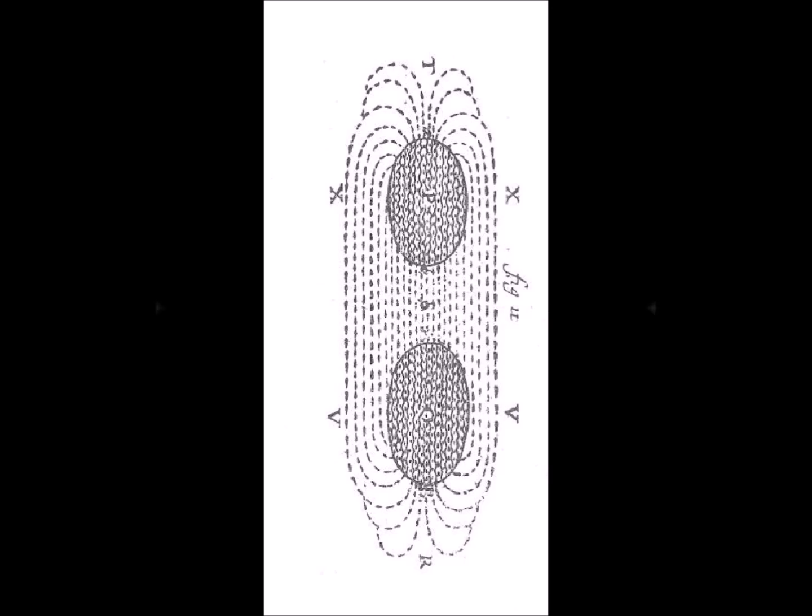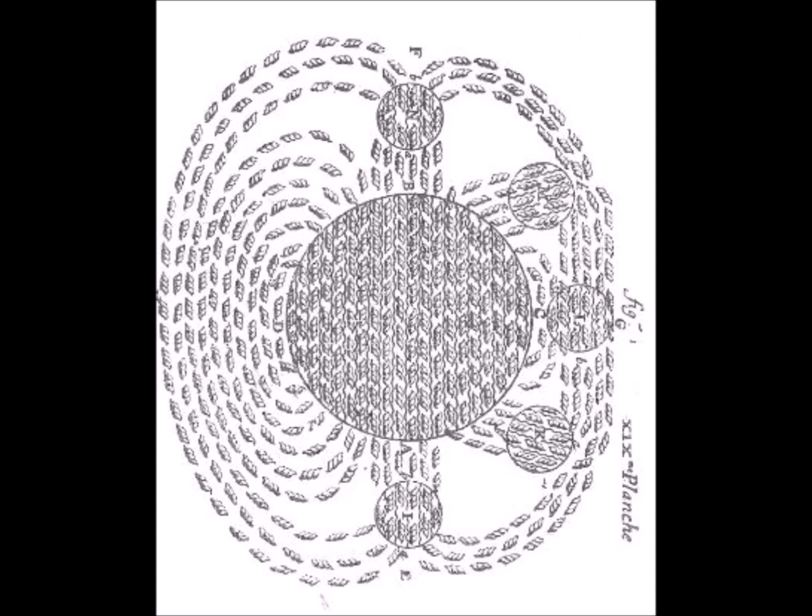The currents of these fluids in the Earth's conduits return them to the other pole by turning around the Earth. Their effect on the magnetic bars explains their orientation.